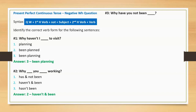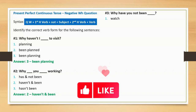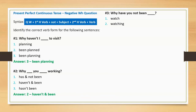Sentence three: 'Why have you not been blank?' Option one: watch. Option two: watching. Option three: watched. Correct answer: watching. Full sentence: 'Why have you not been watching?'